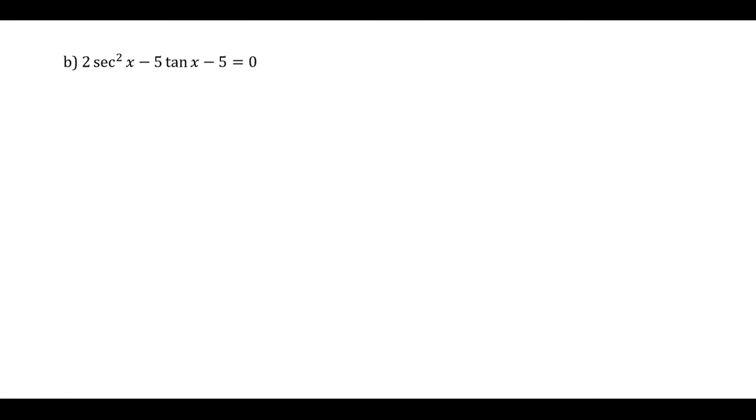Okay, and then our next example here. Well, we've got a secant and a tangent. That's not going to work. But what do you notice about the secant squared x? So I can replace secant squared x with 1 plus tan squared x. That's an identity. We don't see it super often, but once in a while.